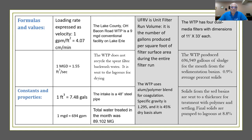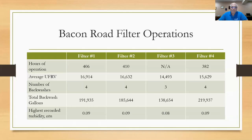Let's launch into some of these questions. We have filter operation data showing hours of operation for each filter, the average unit filter run volumes, and the number of backwashes. Notice for filter number three, they did not give us the hours of operation, so we're going to try to figure that out as we go along. It also shows backwash water used in gallons and the highest recorded turbidities out of each filter, which looked pretty good.